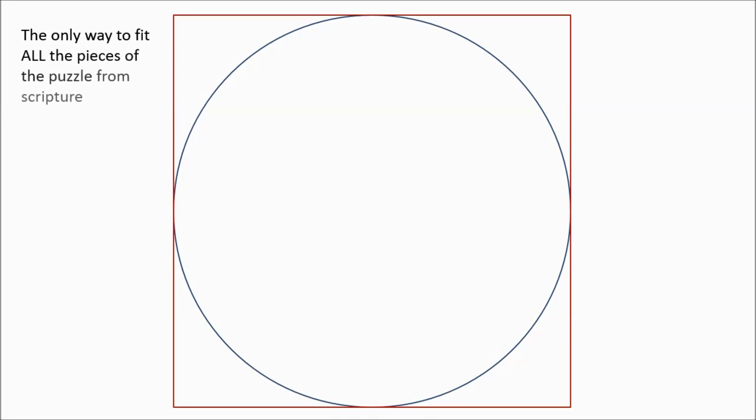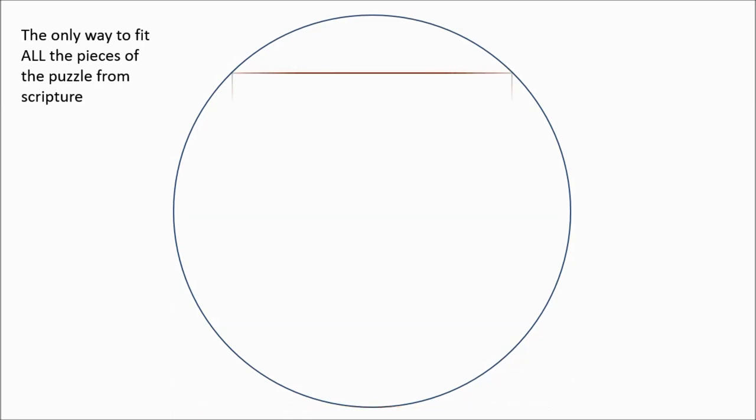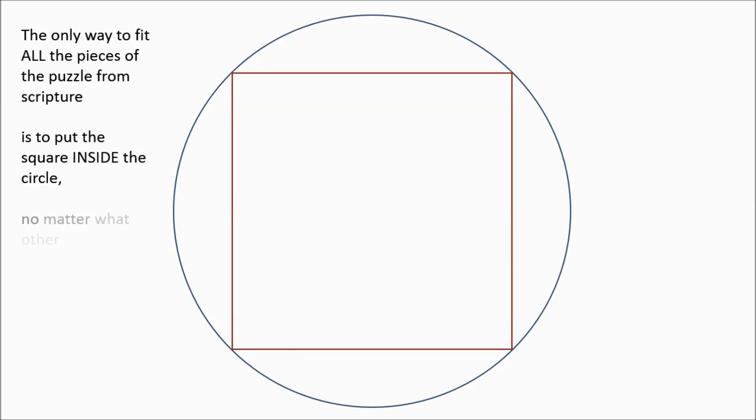If you want to solve the puzzle properly and make sure all the pieces fit perfectly together, we need to take the square and put it inside the circle. No matter what other questions that raises, scripture has to be correct. It's the benchmark. It's the foundation. And now this much is all of scripture. Now God can look down and sit upon the circle of the earth and he's inscribed a circle on the face of the deep and he's got four corners to the earth where people can be gathered from and where angels can stand.